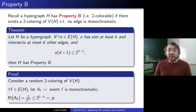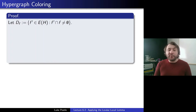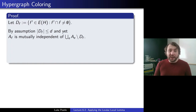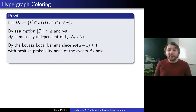We let Df be the set of edges f' where f' ∩ f is non-empty. By assumption, |Df| is at most d, and Af is clearly mutually independent of anything outside. Any edge that doesn't share vertices with f — the event that f is monochromatic — is mutually independent of all those other events outside. Thus we conclude by the Lovász Local Lemma: since e·p·(d+1) ≤ 1 (because p = 2^(1−k), putting that on the other side gives 2^(k−1)), with positive probability none of the events Af hold, which means precisely that there is a two-coloring of H with no monochromatic edge. That concludes the proof.